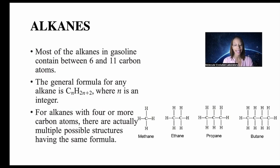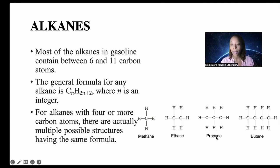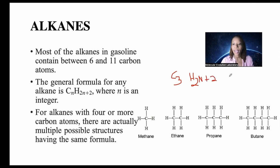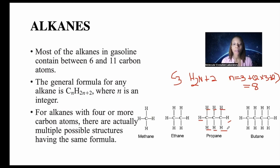This means that if the compound contains n carbon atoms, it will contain 2n + 2 hydrogen atoms. For example, propane has three carbon atoms, so it contains C3H(2×3+2) = C3H8 — eight hydrogen atoms. For alkanes with four or more carbon atoms, there are multiple possible structures with the same formula, called isomers.